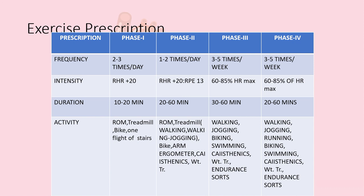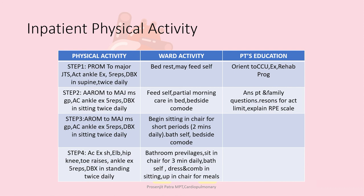Activities by phase: Phase 1 — range of motion exercises, treadmill training, bike. Phase 2 — range of motion exercises, treadmill training, arm ergometer. Phase 3 — walking, jogging, biking, swimming, and all types of endurance sports. Phase 4 — same activities as Phase 3. This is the basic exercise prescription for cardiac rehabilitation patients.